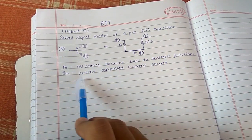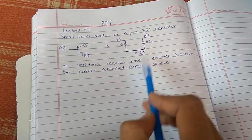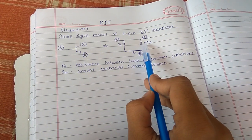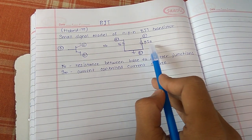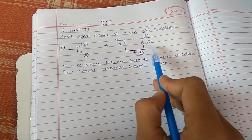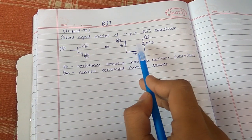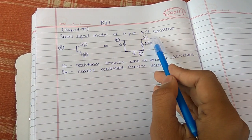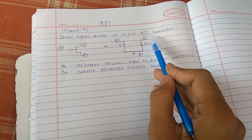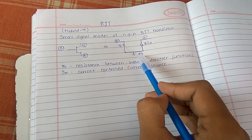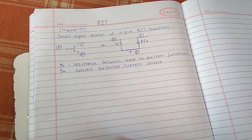This is the current controlled current source, and it has the value beta into IB. I will be explaining why it has the value beta into IB. This current source is present between collector and emitter.